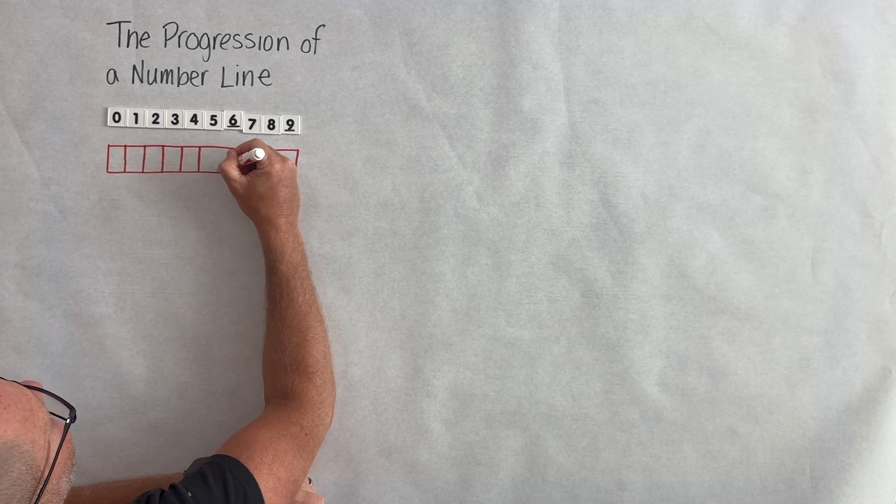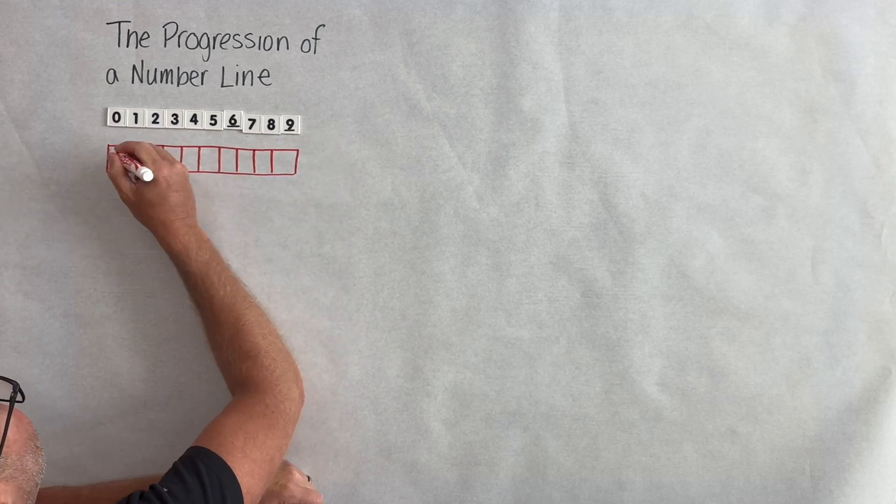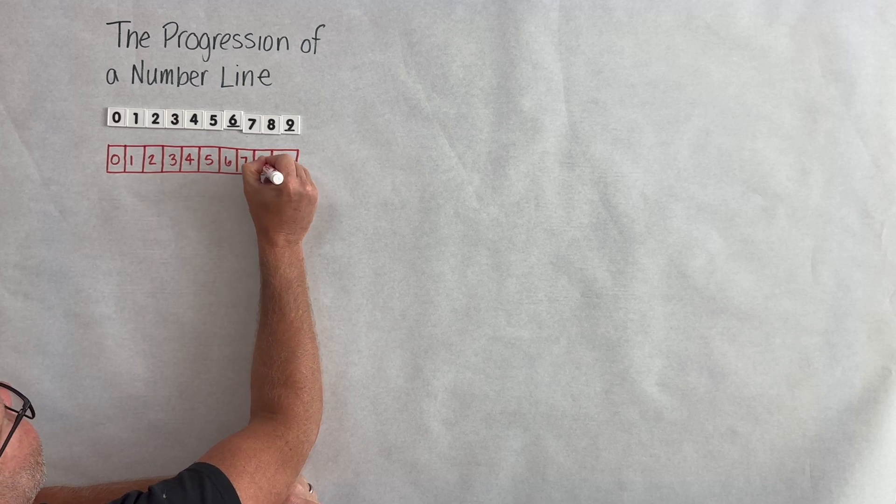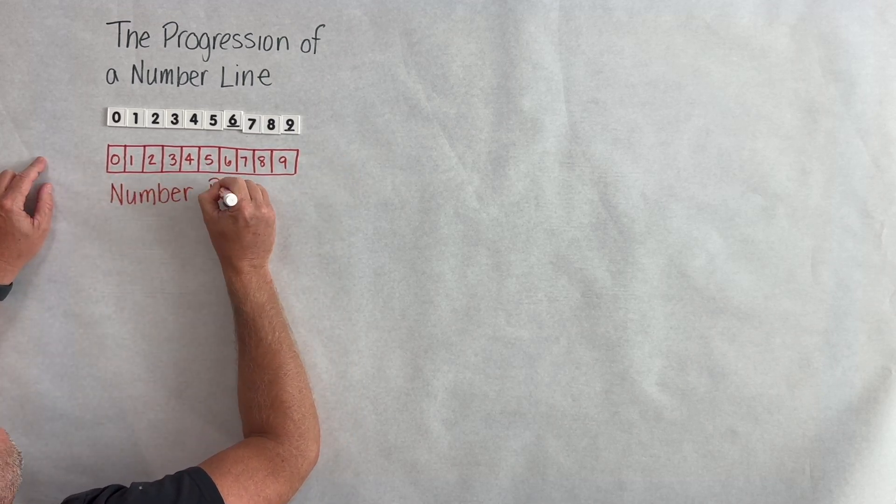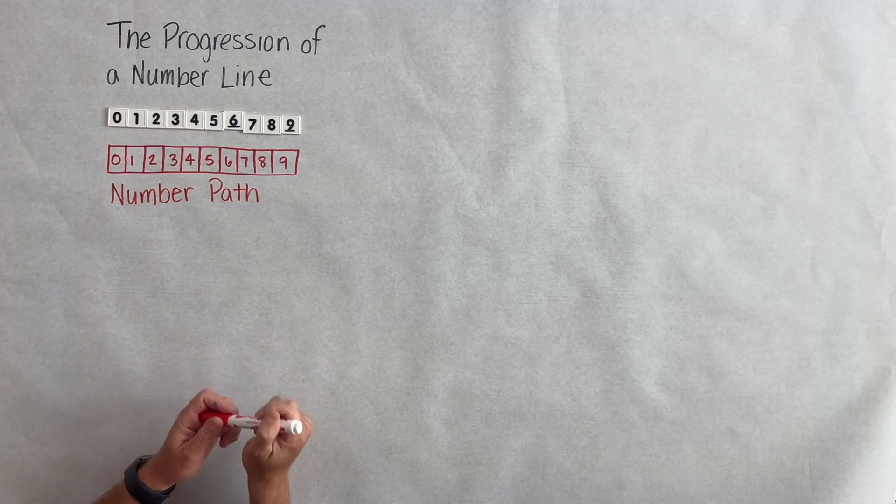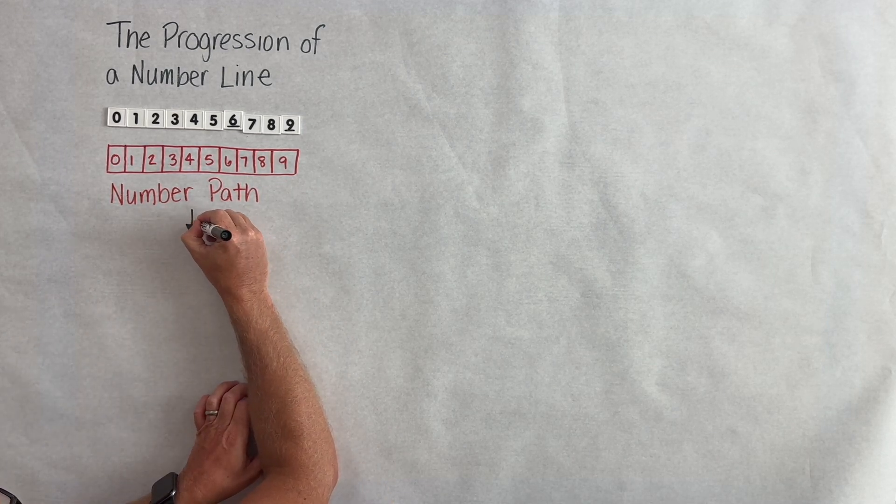It's a really powerful tool because it's a tool that's scalable through all the grade levels. But here as they place down the number tiles this is a type of number line but it's called a number path where each square represents a quantity.